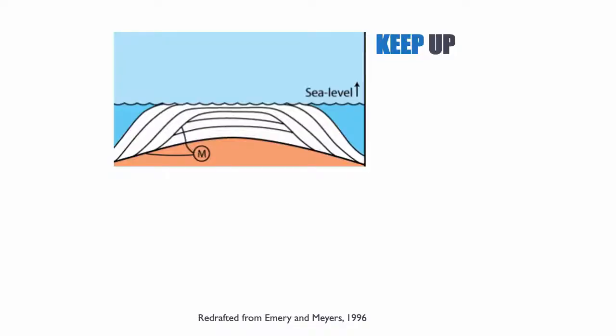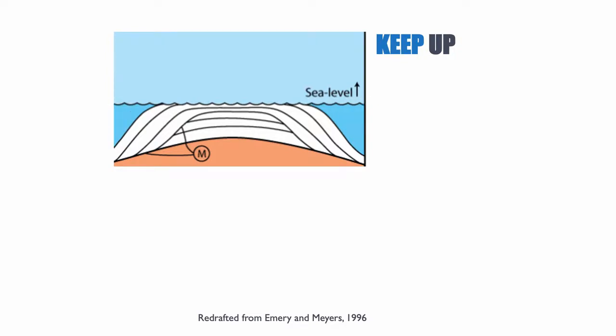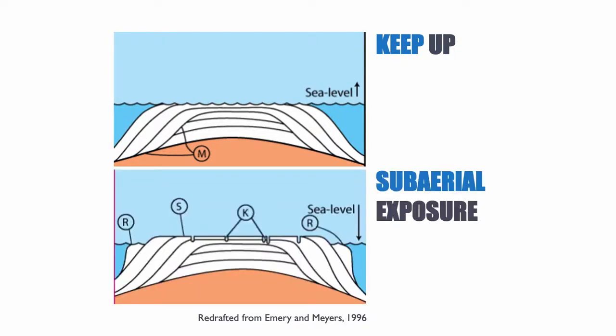During the keep-up phase, population growth is such that corals can fill all of the accommodation and keep up with new accommodation being created. They produce so much sediment that it needs to be exported laterally — so not only does the system aggrade, it also progrades. This is of course what happens during the HST, the highstand system tract.